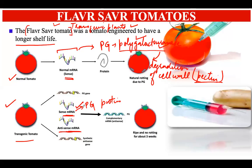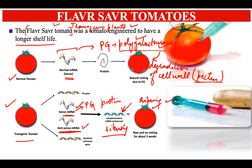When this antisense mRNA was introduced, it bound to the sense mRNA, leading to the silencing of the PG gene. Because this mRNA has been silenced, the polygalacturonase enzyme can no longer be produced. This blockage means the enzyme is not produced anymore, which leads to a delay in the degradation of pectin in the cell wall of the tomatoes, and hence the ripening is delayed. This is the mechanism of Flavr Savr tomatoes.